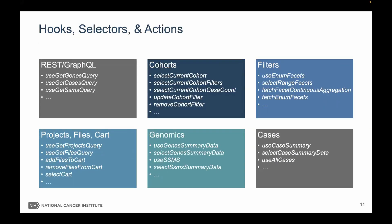The portal maintains the idea of your current cohort, which is the input to the application. There's a set of local filters that can expand upon the filtering to help visualize or refine your cohort. Once done, you can save your cohort, alter it, or create a completely new cohort. Our apps use hooks, selectors, and actions for talking to the API and updating local state. We have a whole set defined — including calls to get, update, or delete the current cohort, get facet data, and interact with projects, files, the cart, genomics, and cases.